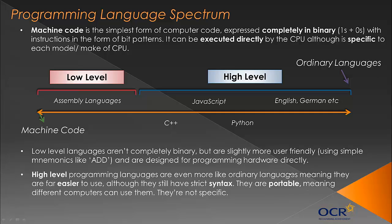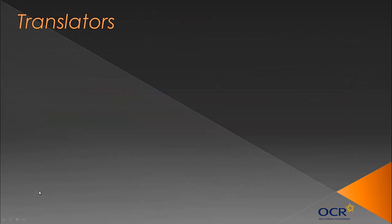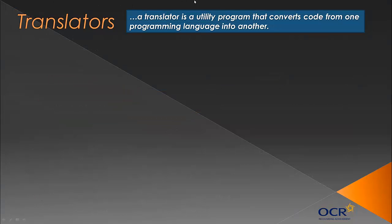High-level languages are portable — I've seen this come up in exam questions. This means different computers can use these programming languages: a computer with an Intel processor and one with an AMD processor can both run Python. They're not specific to each computer like machine code is. Although they get translated into machine code, they're portable. Source code is the written original form of code — what you write on your screen — and then source code is converted into object code and then into machine code.